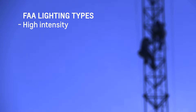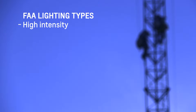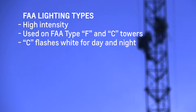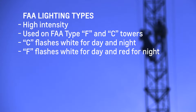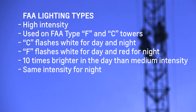High intensity. These are the brightest of the lighting systems and are used on FAA type F and C towers. These towers exceed 700 feet. FAA type C tower lighting flashes white for day and red for night. These systems are ten times brighter in the day than medium intensity systems; however, they utilize the same intensity for night.